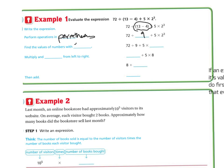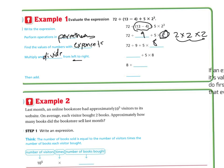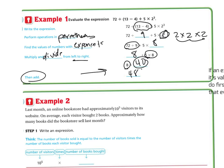Next, find the value of numbers with exponents: 2 to the third power means 2 times 2 times 2, because 2 is the base and 3 is how many times I'm multiplying it — so 4 times 2 is 8. Then multiply and divide left to right: 72 divided by 9 is 8, and 5 times 8 is 40. Finally, 8 plus 40 is 48, so the answer is 48.